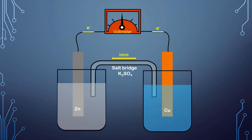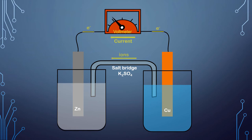Whereas electrons flow in the outer circuit through the wire, the inner circuit is completed by the flow of ions from one solution to the other through the salt bridge. If the electrical circuit is completed by pressing the key, we see that electric current flows in the circuit, indicated by the voltmeter.